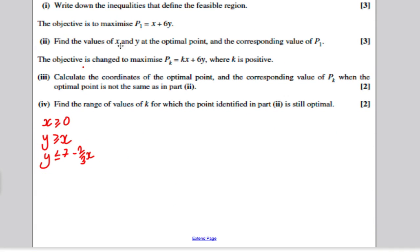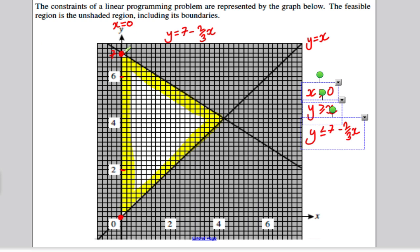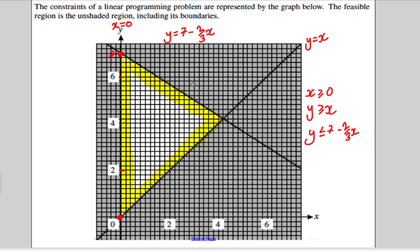Then it says find the values of X and Y at the optimal point of this objective function, P1. So we want to make that as big as possible. The easiest way is to know that the maximum will always occur at one of the vertices of the feasible region. So it will either occur here at 0,0, or at this point of intersection, or at this point.